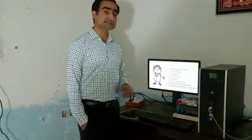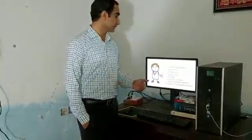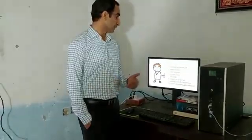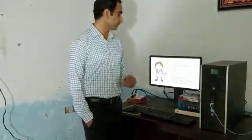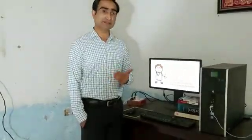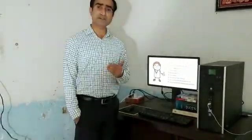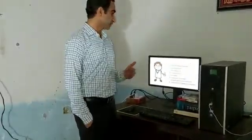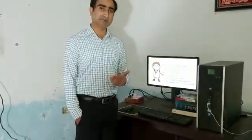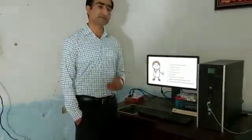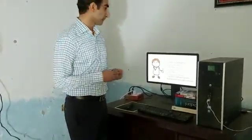Number one is cellular organization. Number two is reproduction. Number three is metabolism. Number four is homeostasis. Number five is heredity. Number six is response to stimuli. Number seven is growth and development. Number eight is adaptation through evolution.